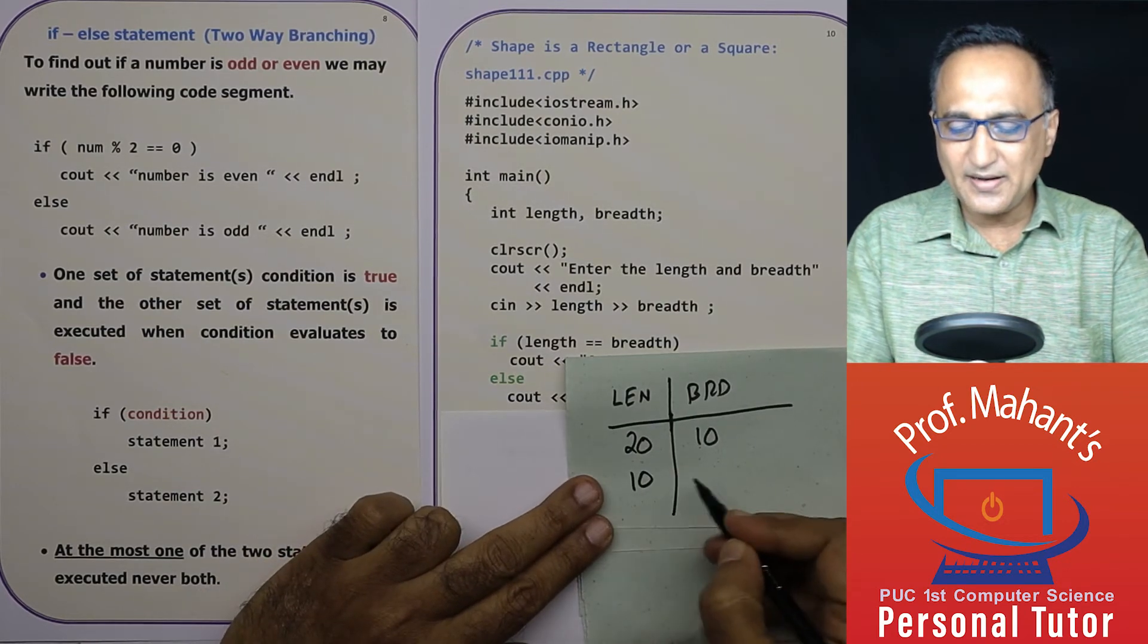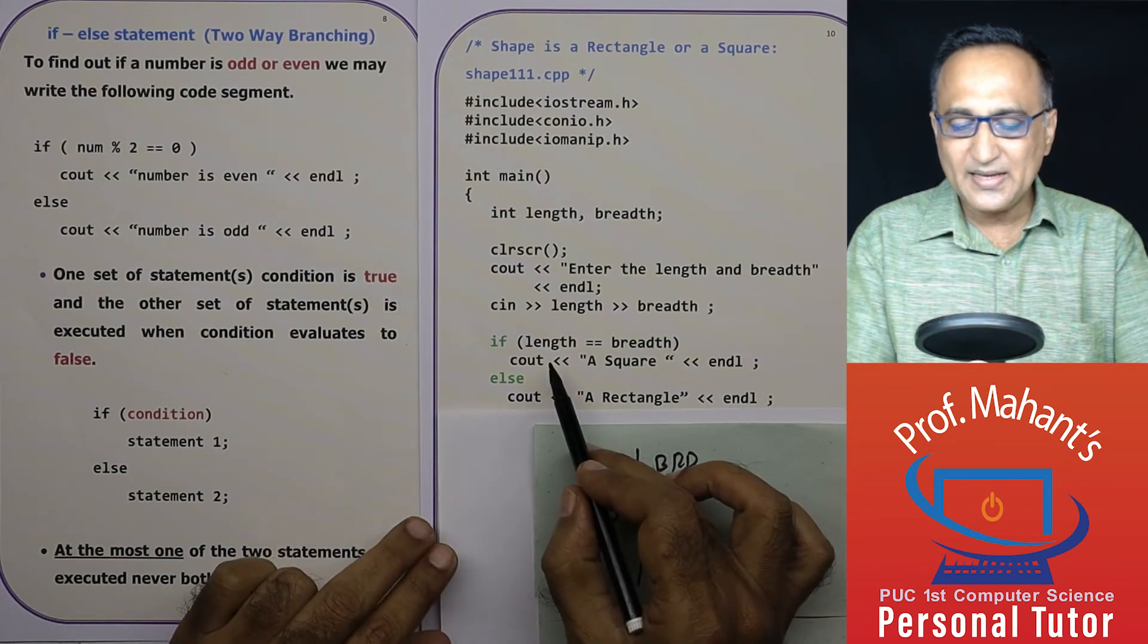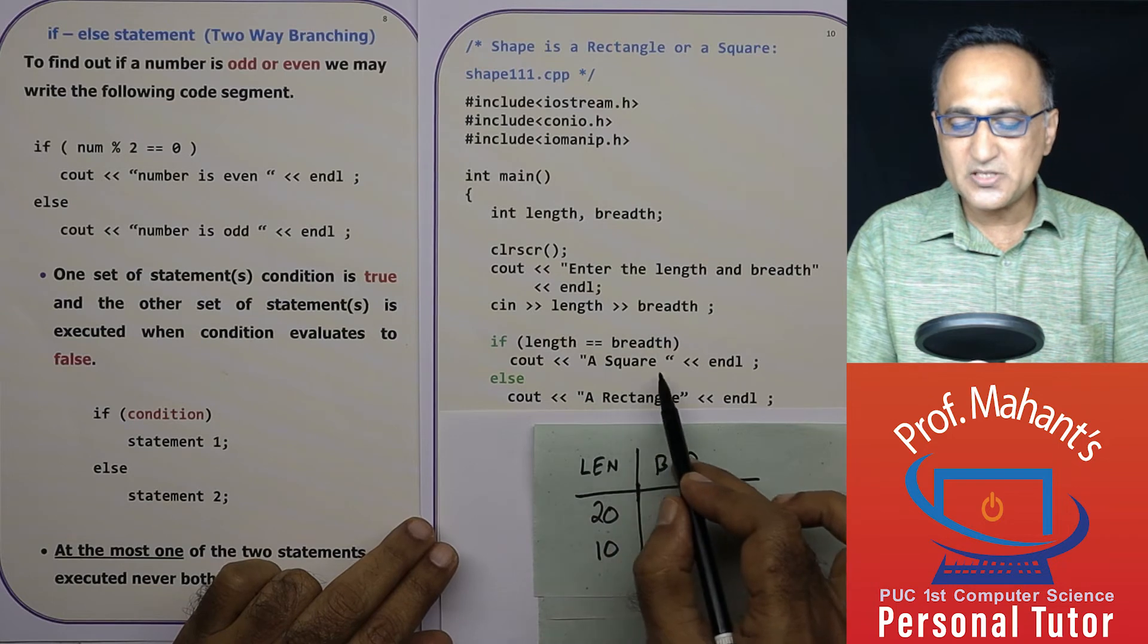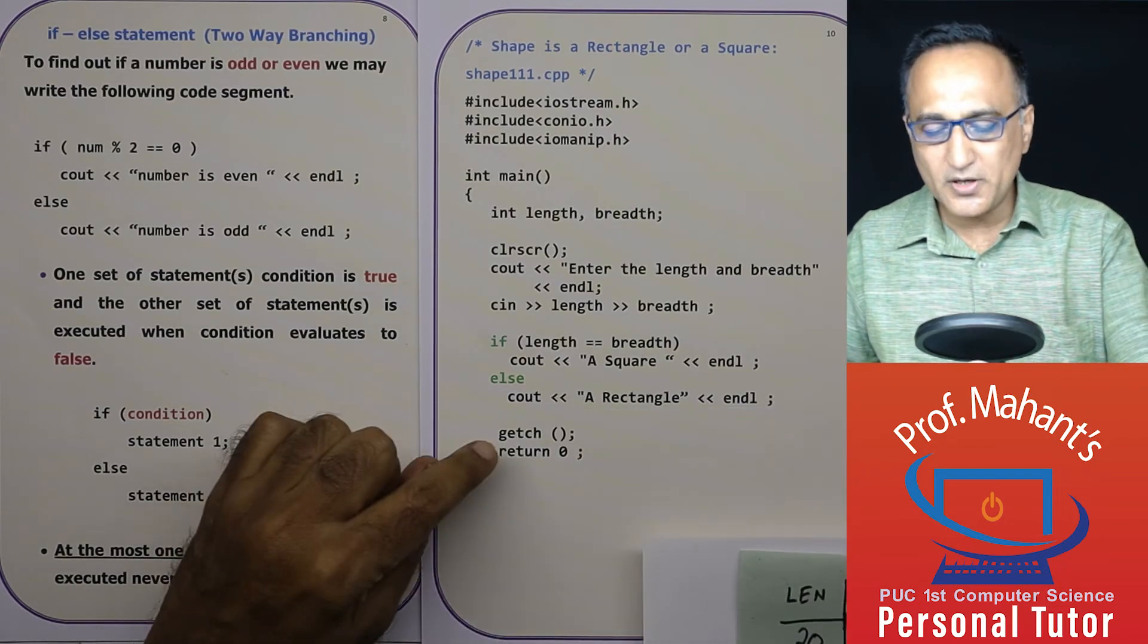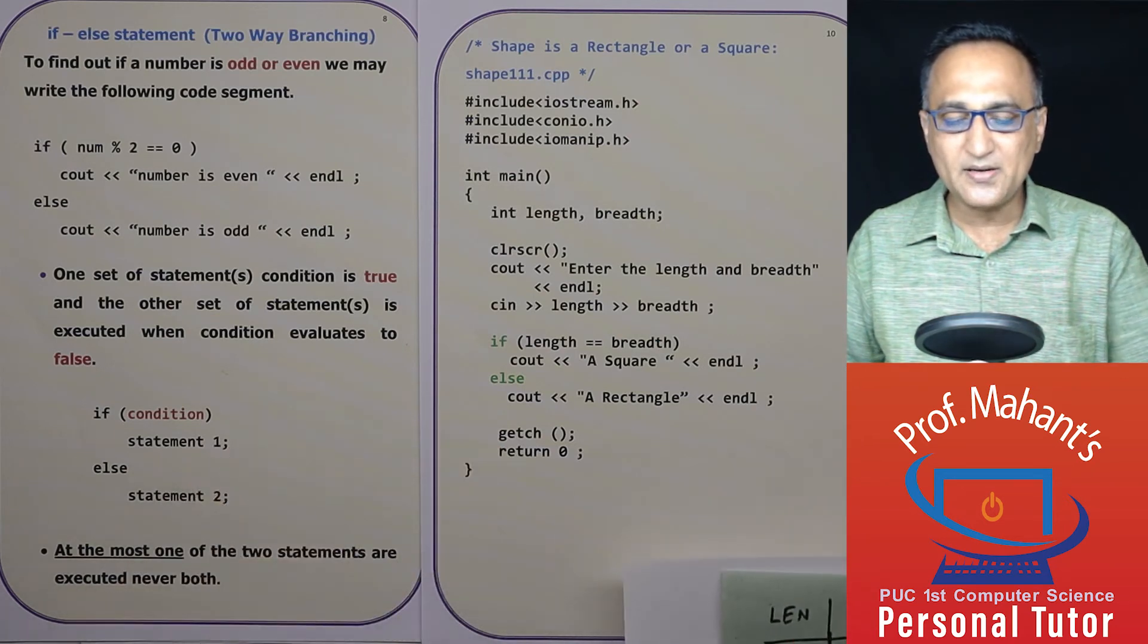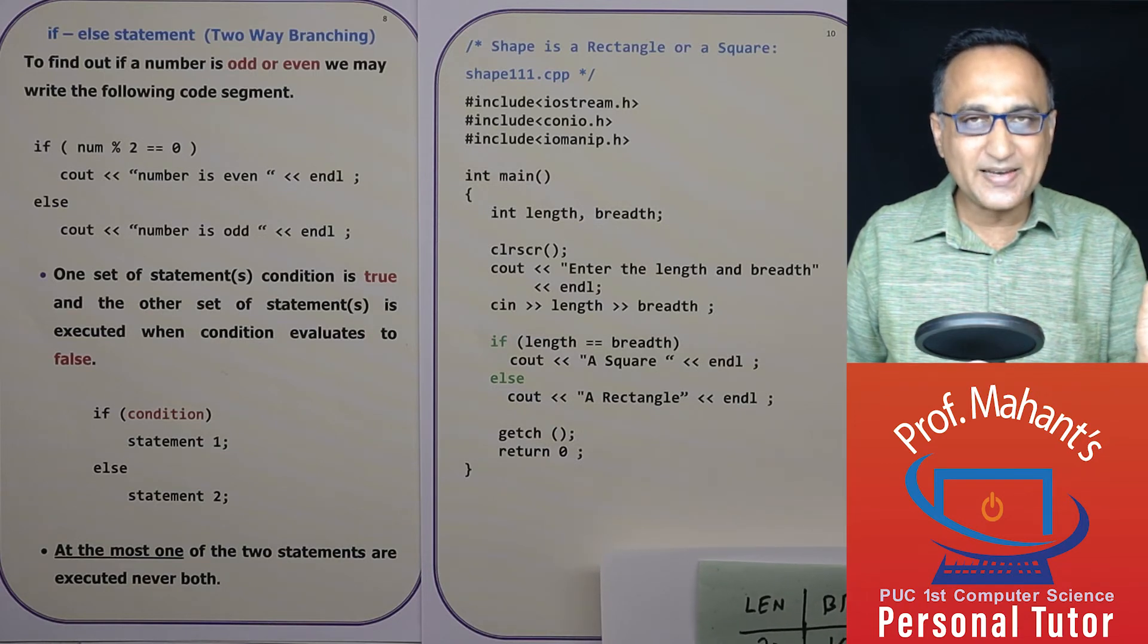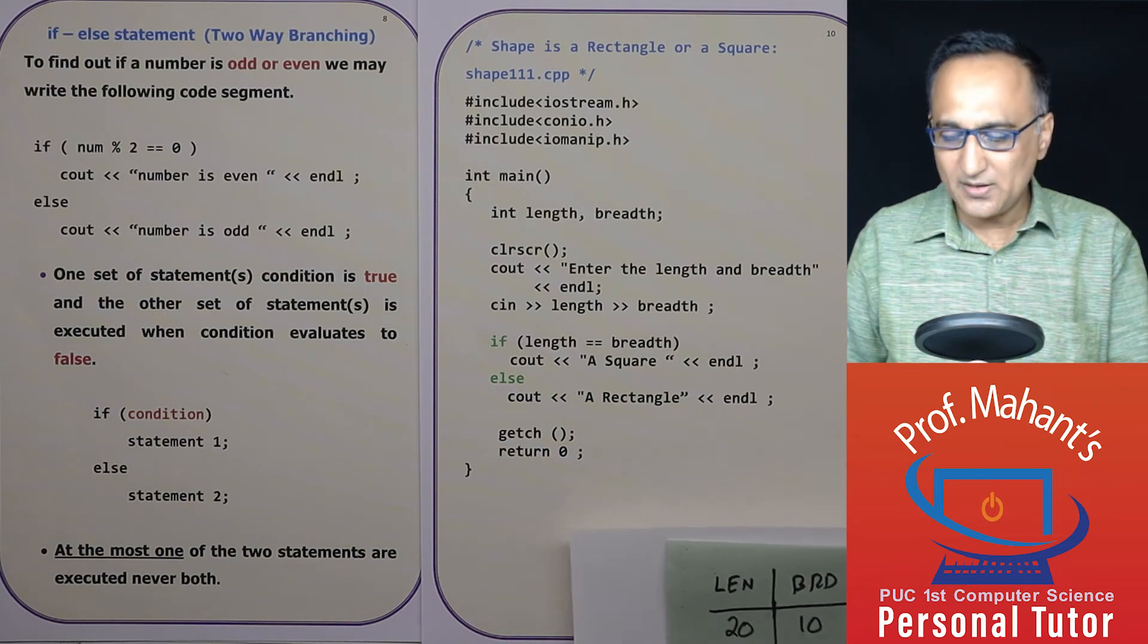Now let's take another case. Let me enter 10 and 10. If I enter 10 and 10, then what is going to happen? Length 10 is equal to breadth. So the shape is a square and it will print that message and end. So if the length of two sides is the same, that means length equal to breadth, the shape is a square, else the shape happens to be a rectangle.